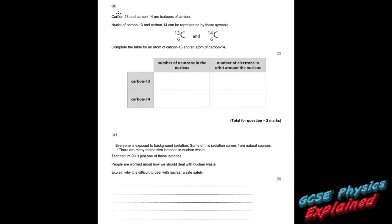Question six: carbon-13 and carbon-14 are isotopes of carbon. What that means — and this is often a two-mark question — is they have the same number of protons (same atomic number, which is the number of protons) and a different number of neutrons.